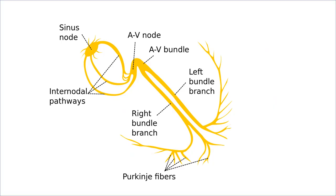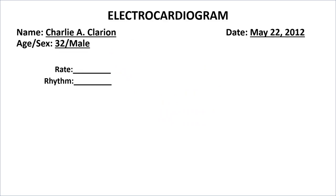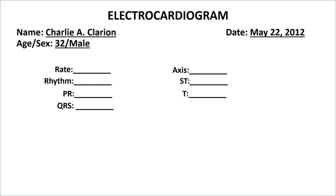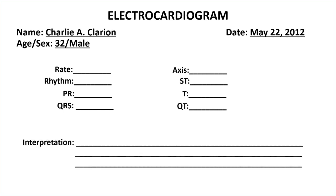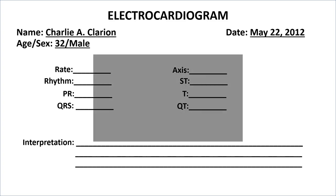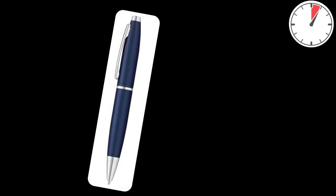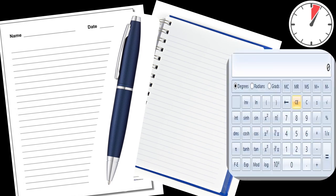After knowing the basic physiology of the electrical conduction system of the heart, you are now ready to determine the rate, rhythm, PR interval, QRS complex, axis, ST segment, T-wave, QT interval, and interpretation. I will give you time to get a pen, a paper or notebook for jotting down notes and some computation, and a calculator because we will have an ECG reading workshop.